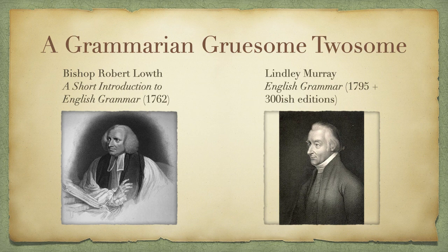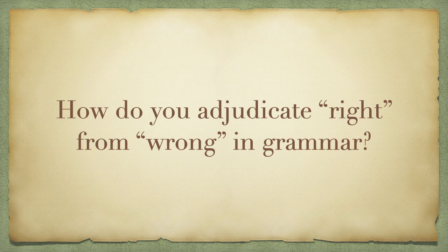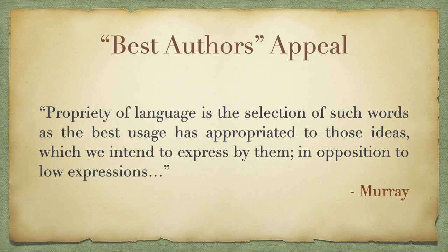These two men — Lowth and Murray — were not the first writers of English grammars; there were other people as far back as the 16th century writing about this topic. But they were extremely influential and offer some of the most comprehensive treatments of the subject, which is why we're focusing on them today. The big question I want to concentrate on is: how do you adjudicate right from wrong in grammar? These early grammarians were the ones who had to decide what's right and what's wrong, and it's important to appreciate how they made those calls. Just by way of a spoiler — it's all made up. It's all a house of cards; they're just coming up with different excuses along the way.